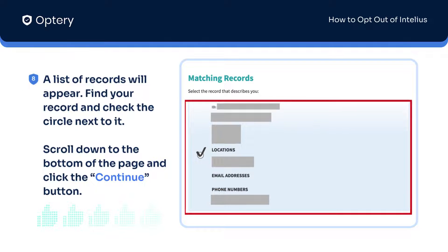A list of records will appear. Find your record and check the circle next to it. Scroll down to the bottom of the page and click the Continue button.